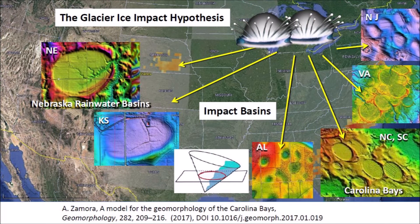In 2017, I proposed that the elliptical geometry of the Carolina Bays implies that these basins originated as inclined conical cavities or penetration funnels made by secondary impacts of glacier ice. This makes sense because ellipses are conic sections. Not all Carolina Bays are elliptical, but many of the distortions can be attributed to the properties of the terrain or to erosion by wind and water after the basins were formed.